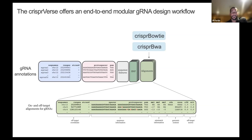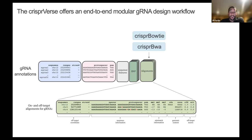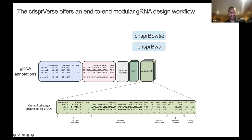We developed CRISPRbowtie and CRISPRbwa, which are wrappers of Bowtie and BWA that allow off-target alignment of guide RNA sequences. For the Cas9 nuclease, if the spacer sequence mismatches to other locations in the genome, the nuclease can be tolerant to that — so you might think you're cutting at a specific location but you might also be cutting elsewhere. We provide rich annotations to tell users what the possible off-targets are and whether those off-targets are located in other genes, so they can decide not to use a guide RNA that cuts in another gene.